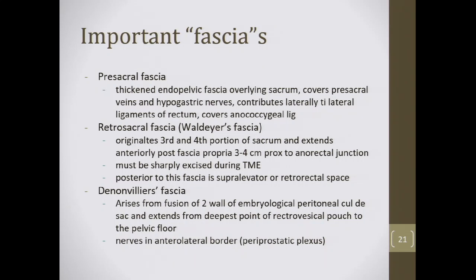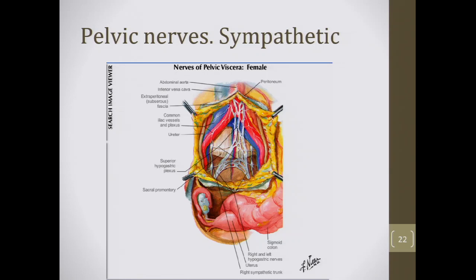Denonvilliers' fascia arises from the fusion of two walls of the embryologic peritoneal cul-de-sac and extends from the deepest point of the rectovesical pouch to the pelvic floor. During anterior dissection of the mid and lower rectum, these two layers can be fairly indistinct. If there's a tumor in this area, you want to stay closer to the prostatic side of this fascia; it also contains periprostatic nerves that can affect sexual function.